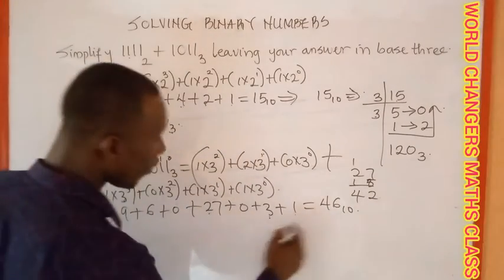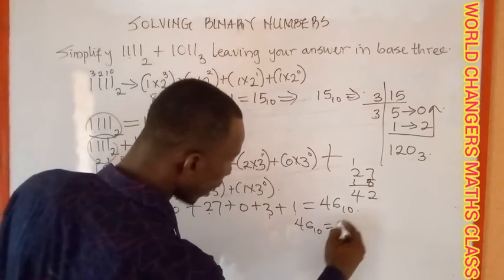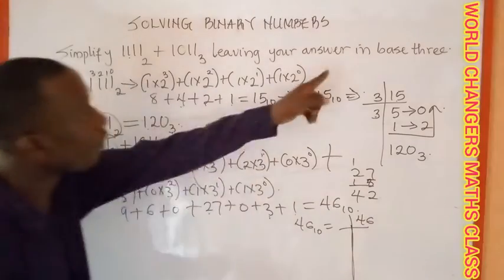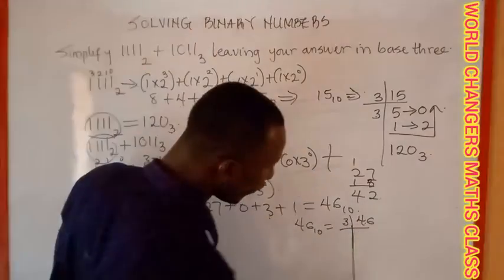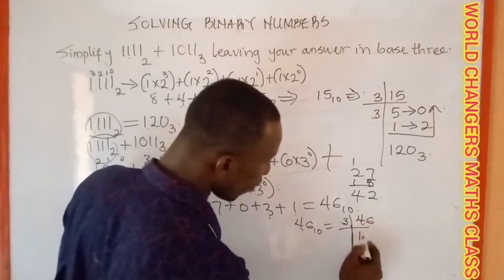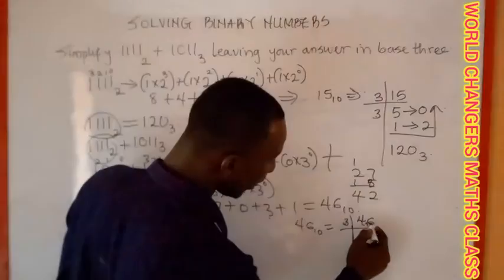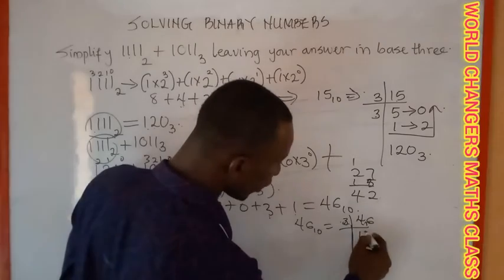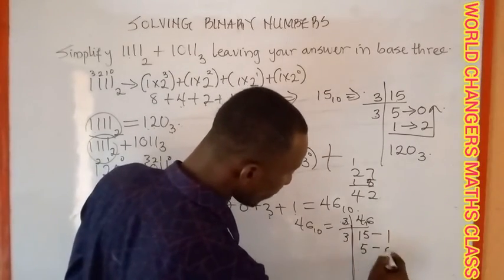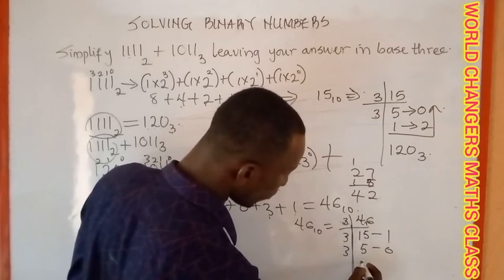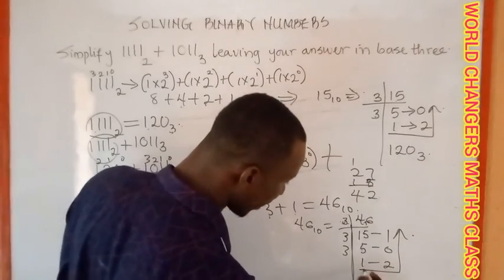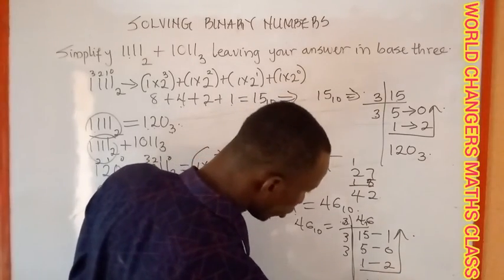Now I have to convert 46 base ten to base three, because I am leaving my answer in base three. Three into 46: three into 4 gives one remainder one; three into 16 gives five remainder one; three into 15 gives five remainder zero; three into 5 gives one remainder two. Nothing can go again, so reading upward the answer is 1, 2, 0, 1 — that is 1201 base three.